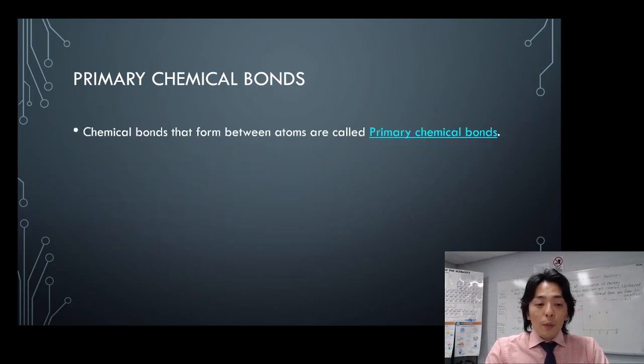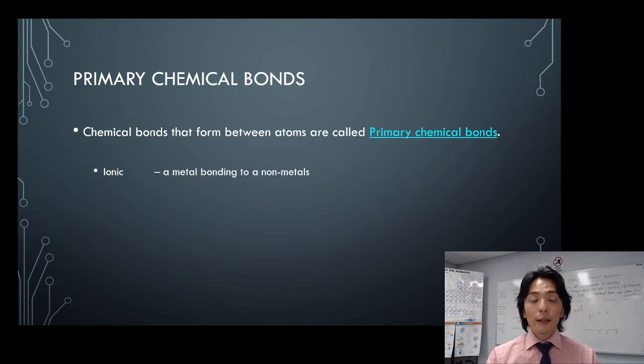Chemical bonds that form between atoms are called primary chemical bonds which require electrons, and we'll look at that in the video hyperlink there.